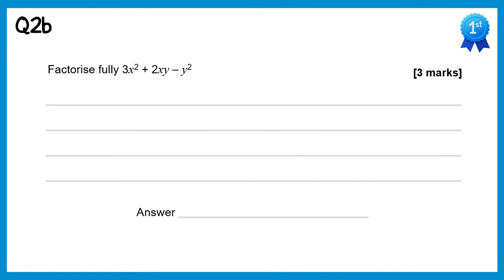This question looks a little bit like a quadratic in its form, and it will factorise into two brackets. To get the 3x squared term we're going to multiply 3x by x. To get the negative y squared term at the end we need to multiply y by negative y. The correct answer is negative y in the first bracket and positive y in the final bracket, because this gives you positive 2xy when you expand.